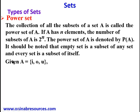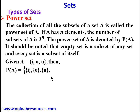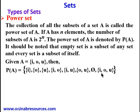Given A = {i, o, u}, the power set of A includes: singletons {i}, {o}, {u}; pairs {i, o}, {i, u}, {o, u}; the empty set {}; and the set itself {i, o, u}. Counting these: 1, 2, 3, 4, 5, 6, 7, 8 — since there are three elements, we expect 2³ = 8 subsets. The cardinality of P(A) is 8, written as n(P(A)) = 8.